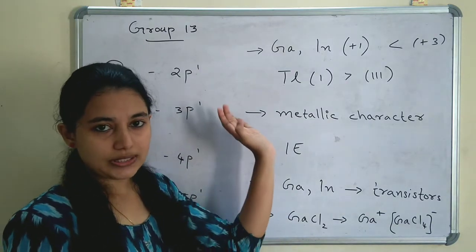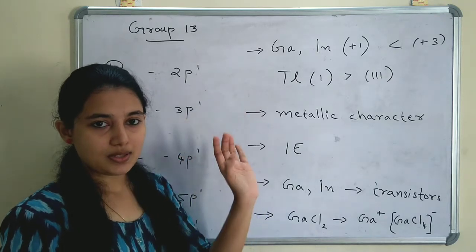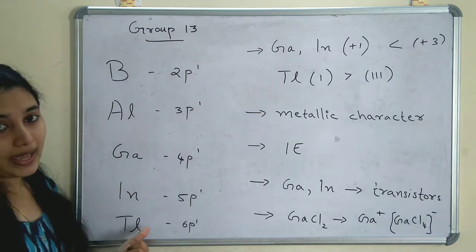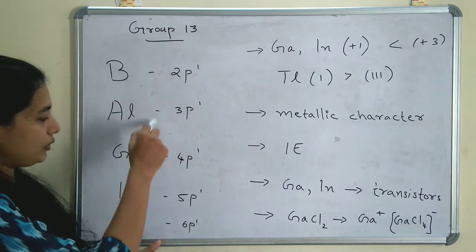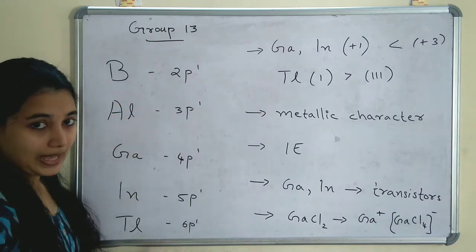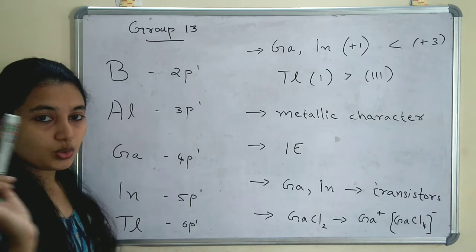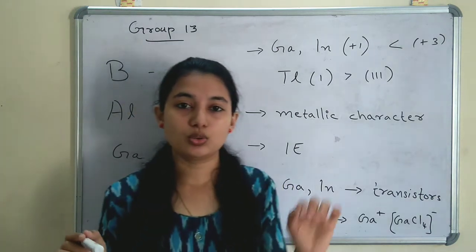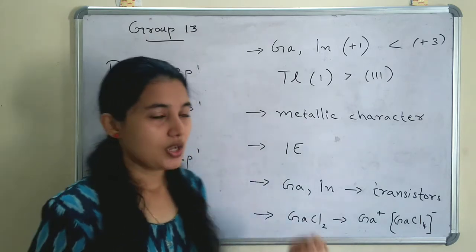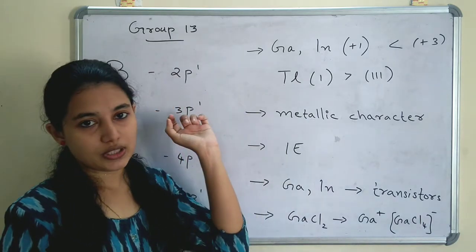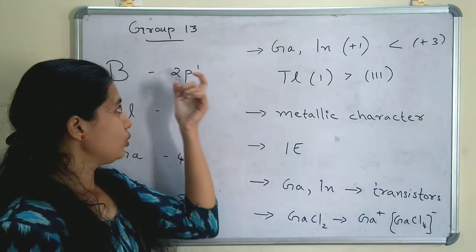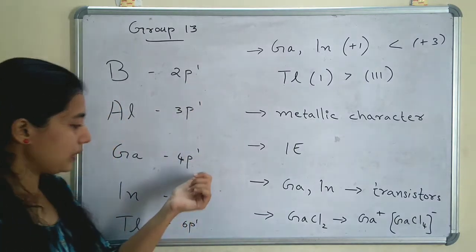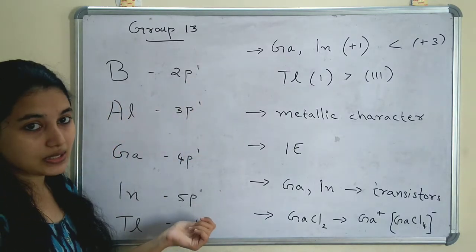In group 13 elements, the elements are boron, aluminium, gallium, indium and thallium. These are P block elements, meaning the outermost electron will enter the P orbital. So the outermost electron configuration will be S2 P1, going from 2P1, 3P1, 4P1, 5P1 to 6P1. So the last electron will enter the P orbital.